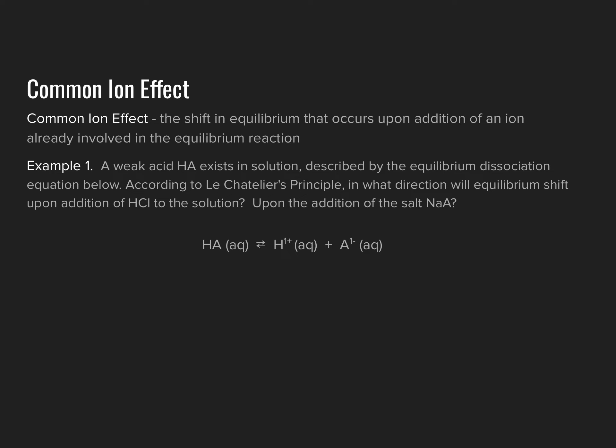Another way of imagining this is if there's an ion present in two different equilibria which simultaneously exist within your system, a change in the concentration of that ion due to one of the equilibria might affect the equilibrium of the other system present. Let's take a look at an example problem and see how this works as an application of Le Chatelier's principle.